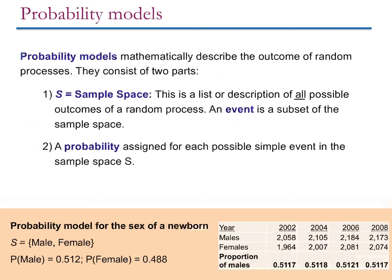For our newborn sex data, the sample space is simply male or female — there are no other possibilities for humans. The probability of male, as we've seen from our data, is 0.512; probability of female is 0.488, about 49%. These are the events within our wider sample space. We've defined a very simple probability model that helps us estimate how likely a newborn is to be male or female. It's no more complicated than that.